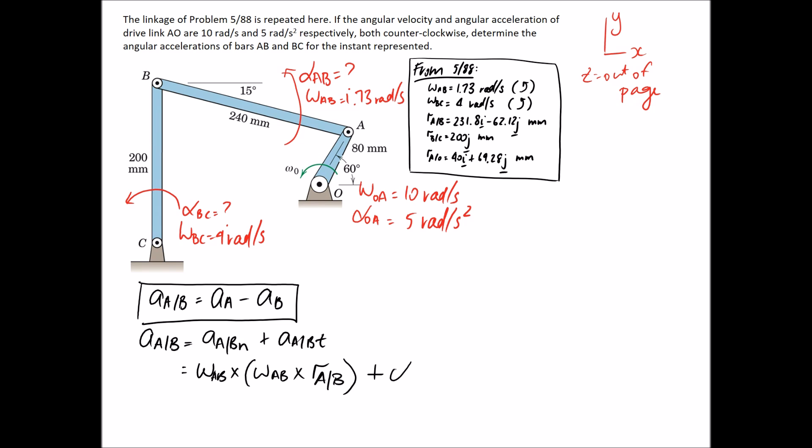So for the tangential direction, it's equal to alpha cross R. So it's going to be alpha for the member, which we called AB, multiplied by the same radius as what we used here. So now it's just a case of filling it in.